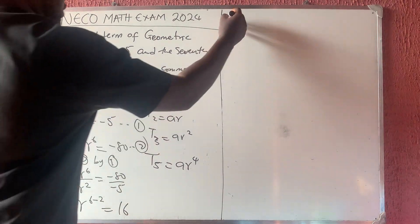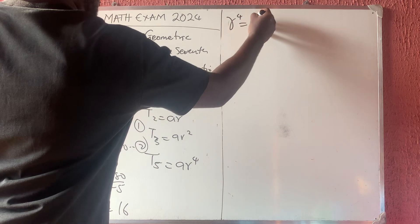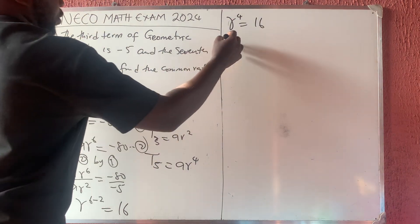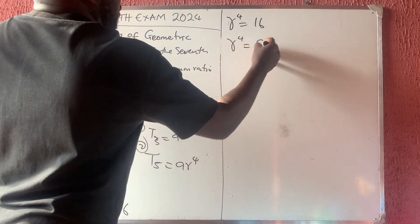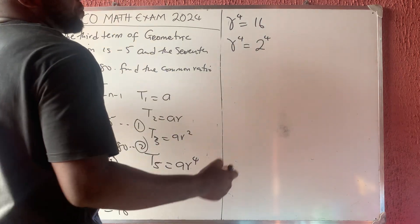So now, this is going to be R raised to the power of 4 is equal to 16. So therefore, R raised to the power of 4 would be 2 raised to the power of 4. How did I get 2 raised to the power of 4?